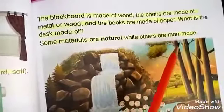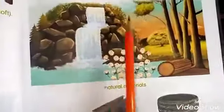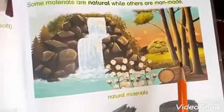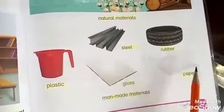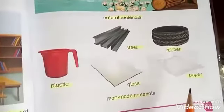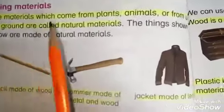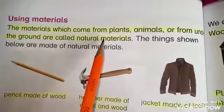Some materials are natural while others are manmade. You have to look at the image of these materials. As you can see, plastic, steel, rubber, paper, glass — all these things are manmade materials.